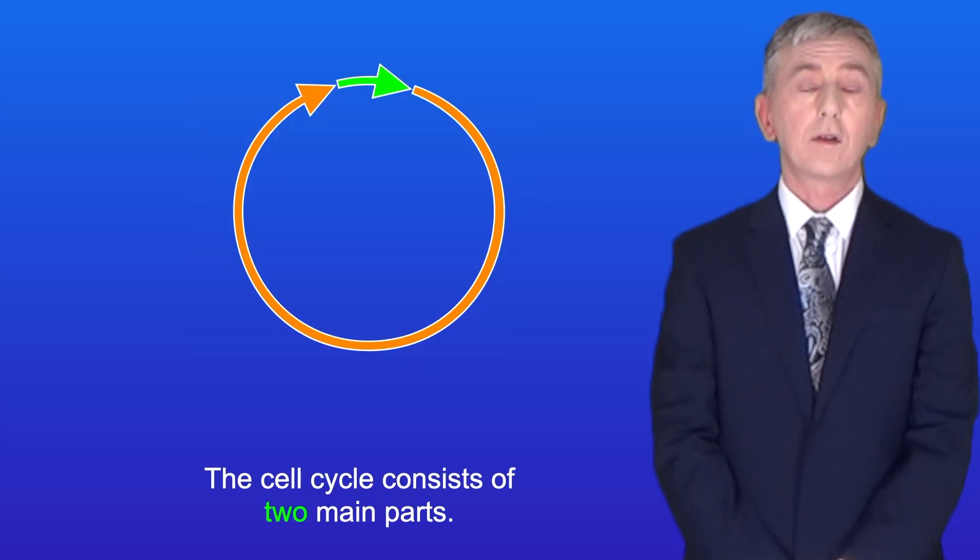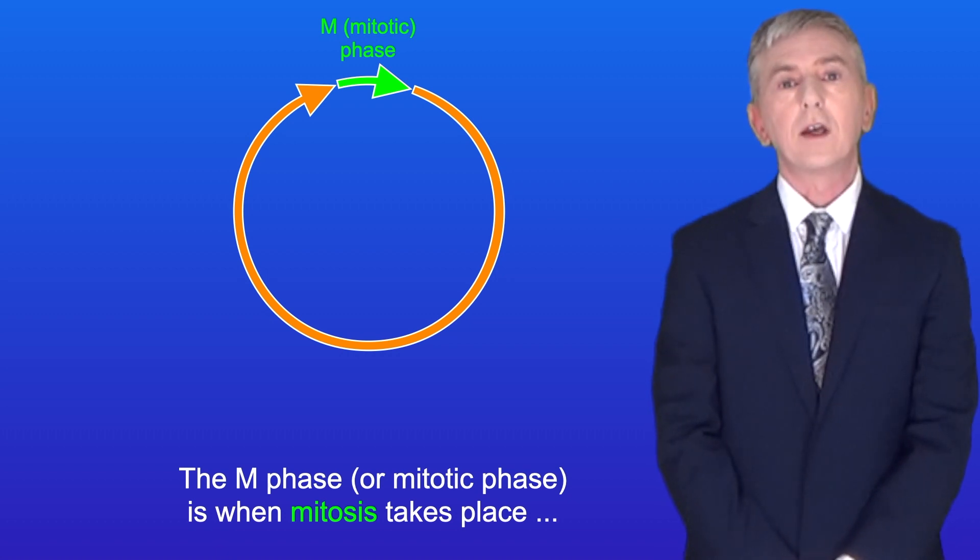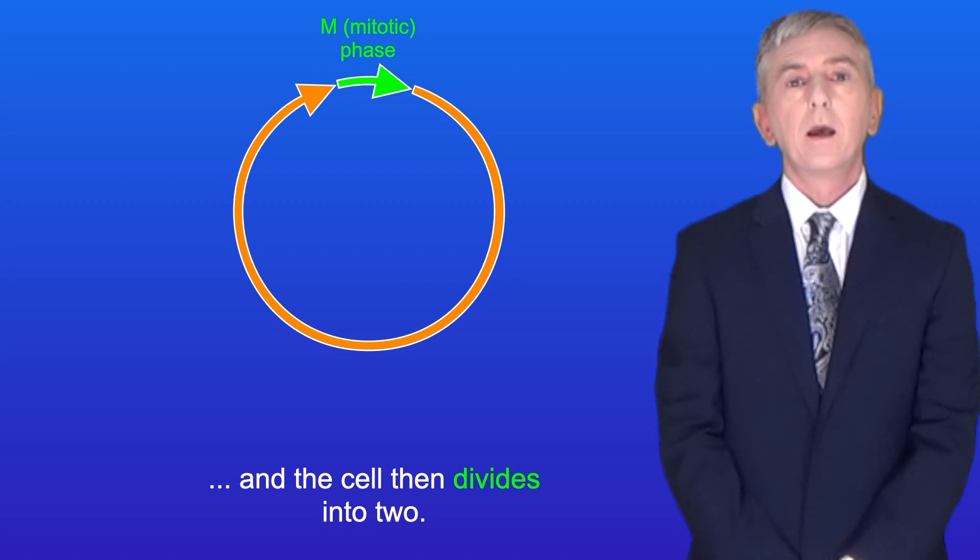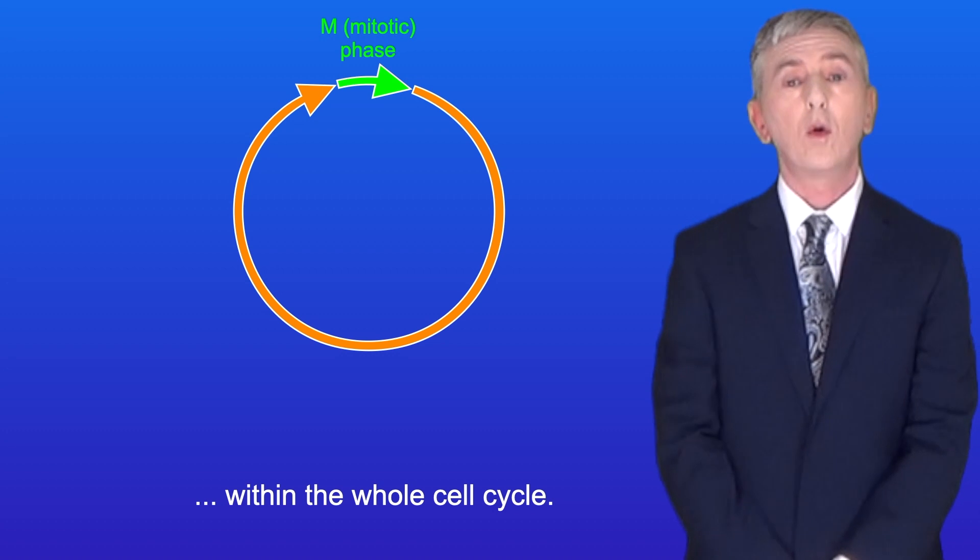The cell cycle consists of two main parts. The M phase or mitotic phase is when mitosis takes place and the cell then divides into two. However, the M phase is actually only a relatively short period within the whole cell cycle.